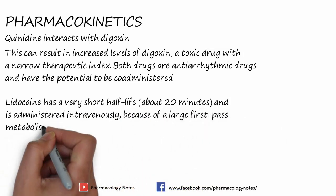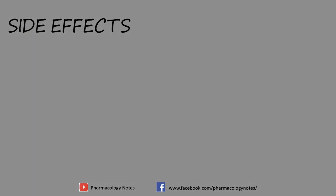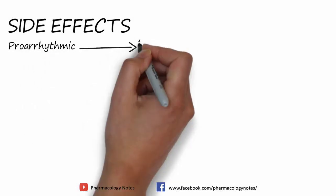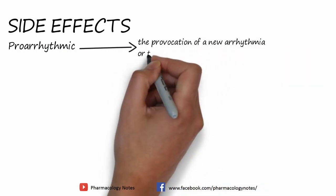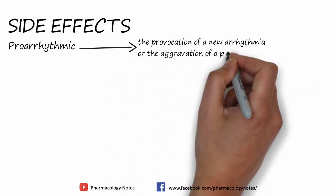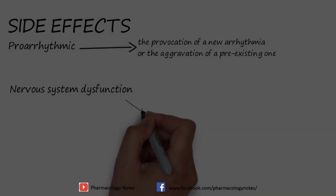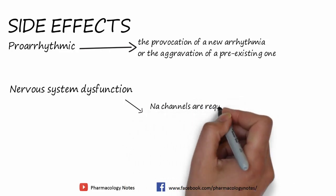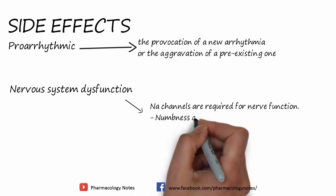The side effects of sodium channel blockers include being pro-arrhythmic, meaning the provocation of a new arrhythmia or the aggravation of a pre-existing one. They also cause nervous system dysfunction, because sodium channels are required for nerve function. Symptoms include numbness and tingling of the lips and tongue, ringing in the ears, inappropriate behavior, decreased consciousness, and seizures.